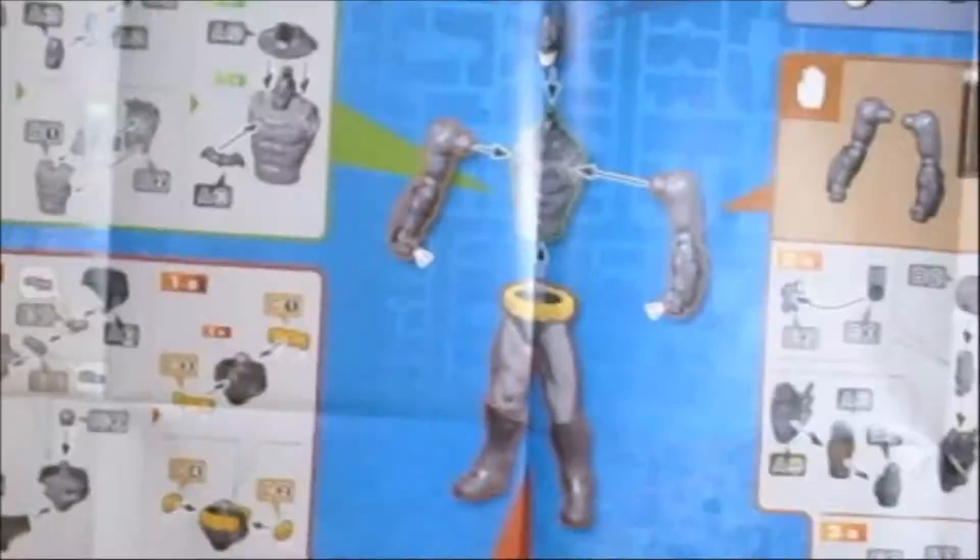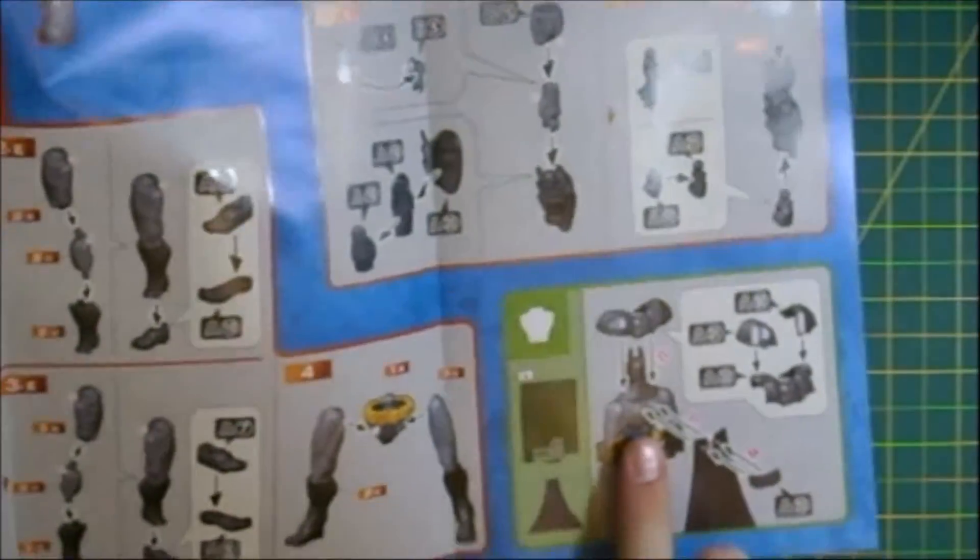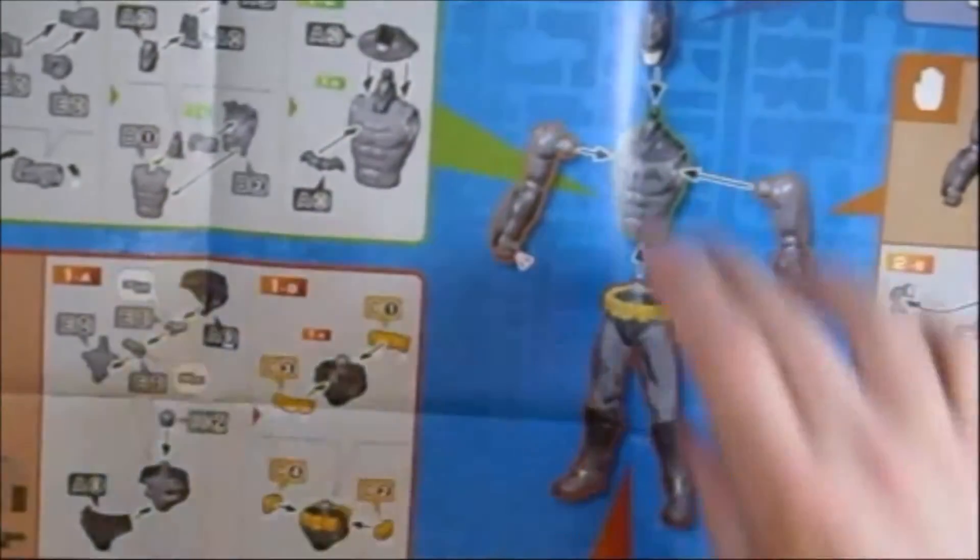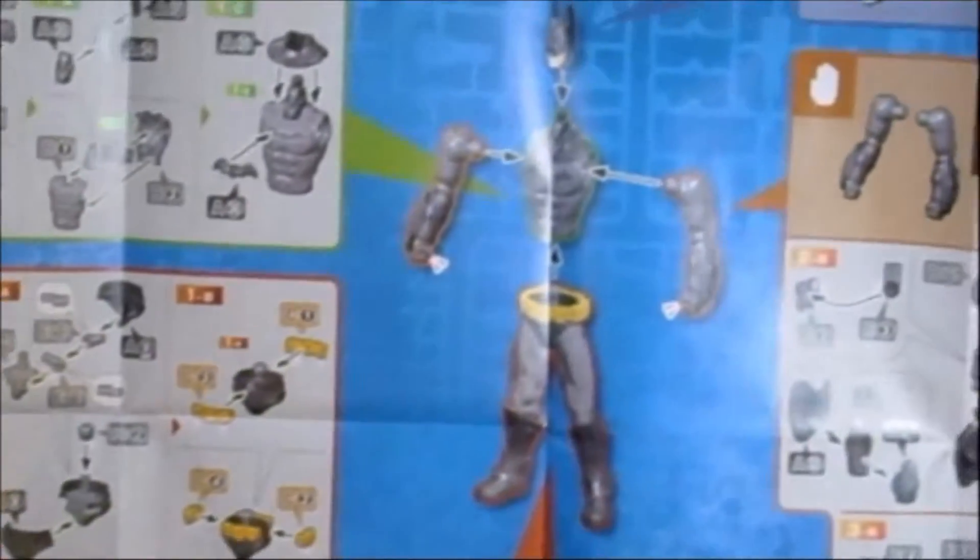And then showing in the very center here, you've got all this stuff all around the edges here. And then in this corner right here, in the bottom right corner, you've got the instructions for the cape. And then again, in the very center showing the assembly of the main figure.